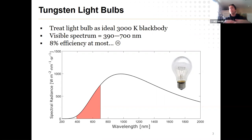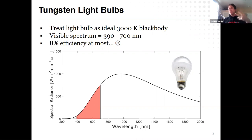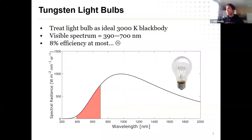So doing a very idealized back-of-the-envelope calculation: our eyes are sensitive for about 390 to 700 nanometers, and you get about 8% efficiency out of an incandescent light bulb. The reality is even worse than that, because your eyes are not uniformly sensitive to all wavelengths equally — some wavelengths stand out and are perceived as brighter. So the true efficiency is probably a lot less than that.